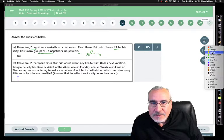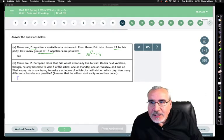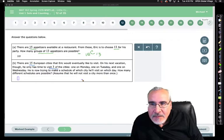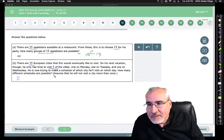There are 15 European cities that Eric would eventually like to visit on his next vacation, although he only has time to visit three of the cities. One on Monday, one on Tuesday, and one on Wednesday. That's a lot of quick traveling, but they have a great train system in Europe.